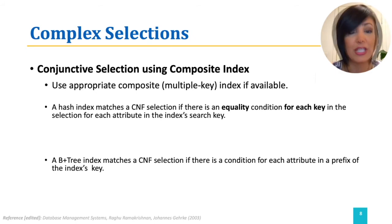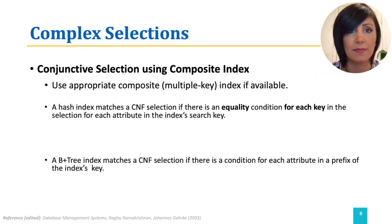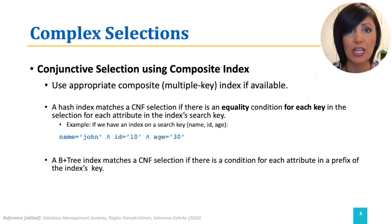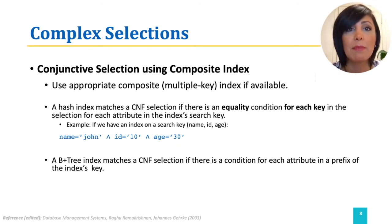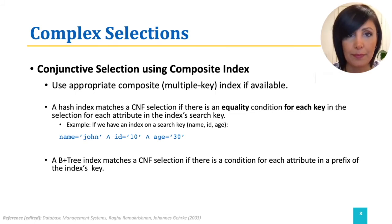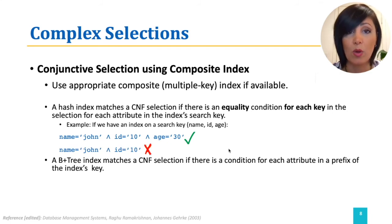For example, if we have a students table with name, id, age, and GPA, and an index on the composite search key (name, id, age), we can use a hash index with this composite key to find students meeting the condition: name equals 'John' AND id equals 10 AND age equals 30. But we cannot use it to match the selection condition name equals 'John' AND id equals 10, because it does not have all components of the composite key. Note that with a hash index, this only works for equality conditions.